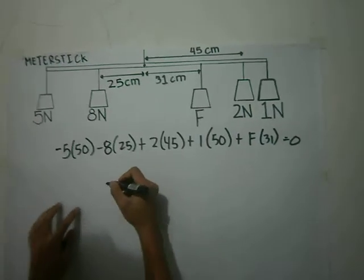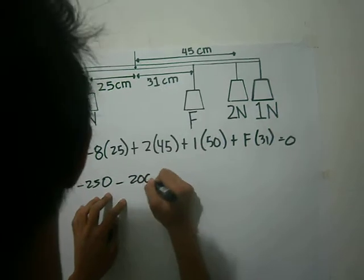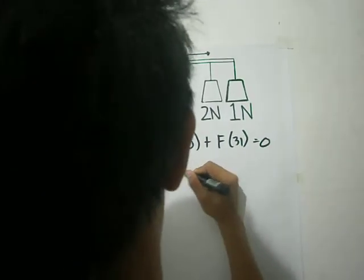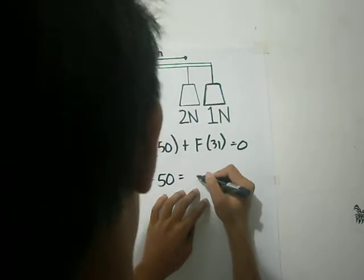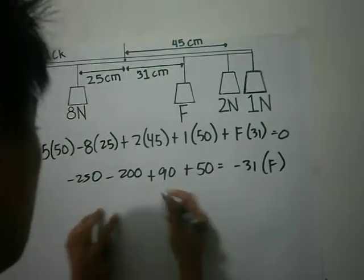Then simplify, negative 250, minus 200, plus 90, plus 50, is equal to negative 31 F. So simplify.